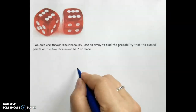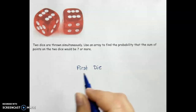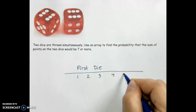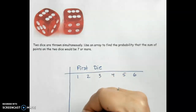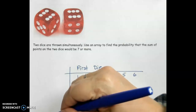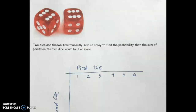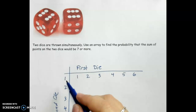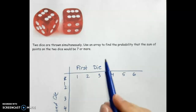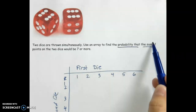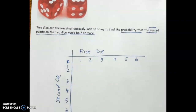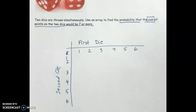The first event is what can happen when you throw the first die. When you throw a die, you can land on one, two, three, four, five, or six. I'll put those across the top. The second event goes on the side — that's what happens when we throw the second die, which can also land on one, two, three, four, five, or six. In the problem, they ask what is the probability that the sum of the two dice will be seven or more, so in the middle of our array we're going to add up the two dice totals.